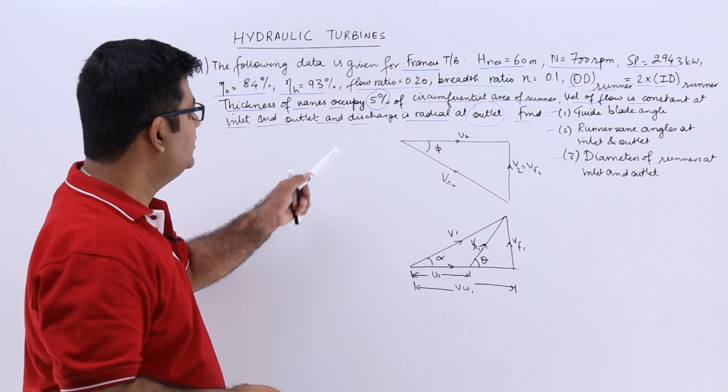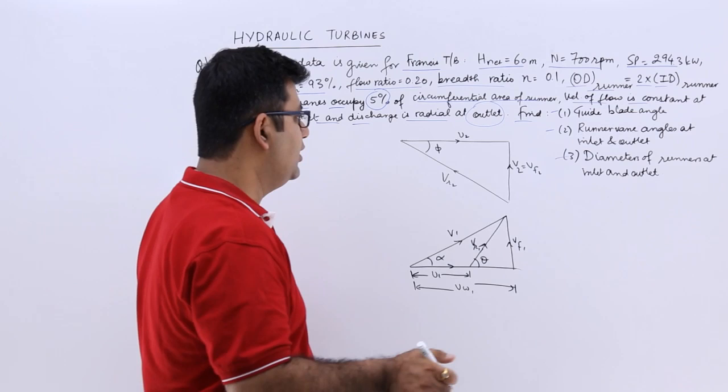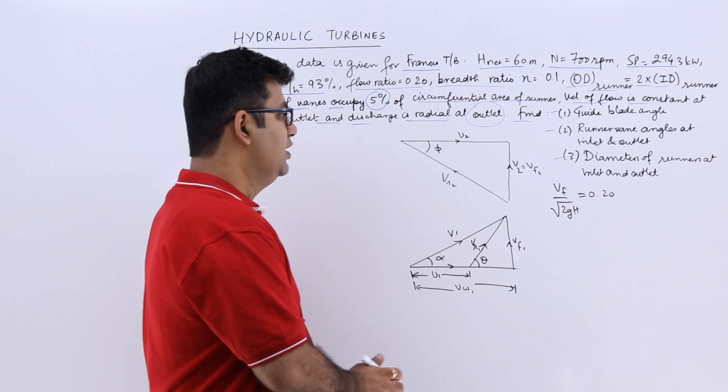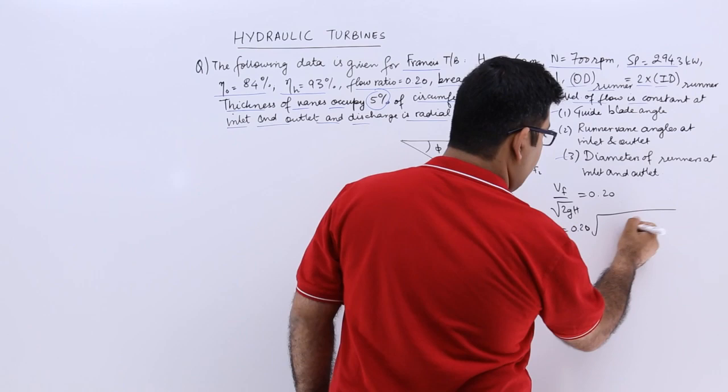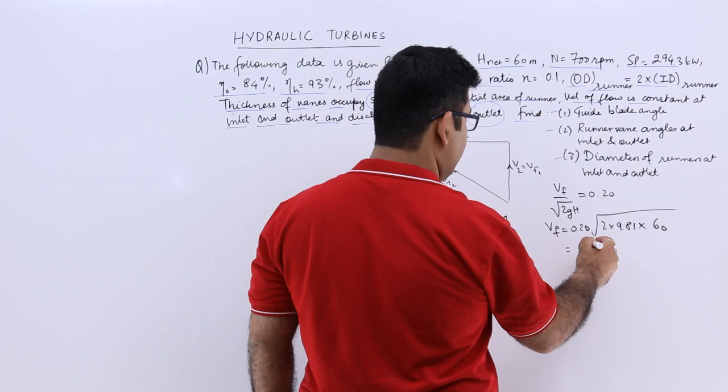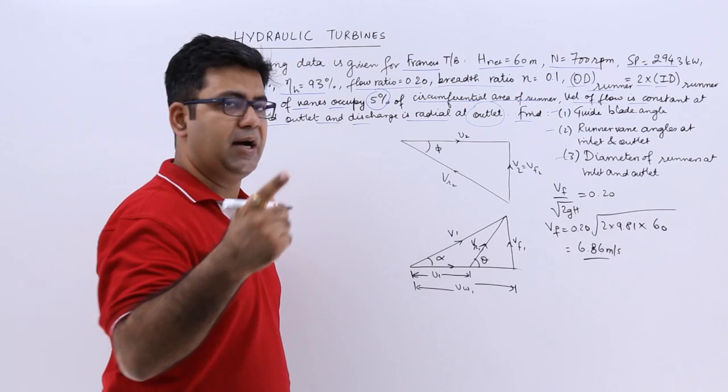The flow ratio is given as VF divided by √(2GH), and it equals 0.2. From here we can find VF: VF = 0.2 × √(2 × 9.81 × 60), which gives VF = 6.86 meters per second.